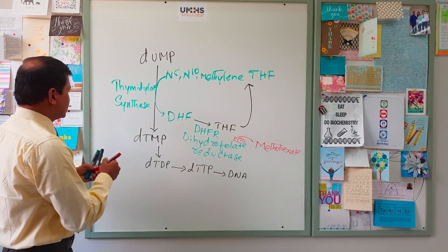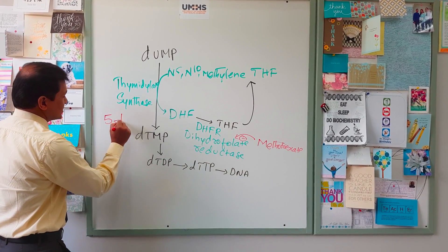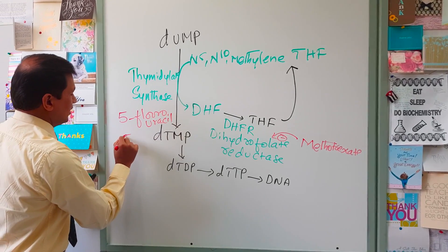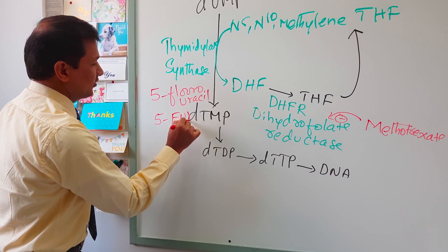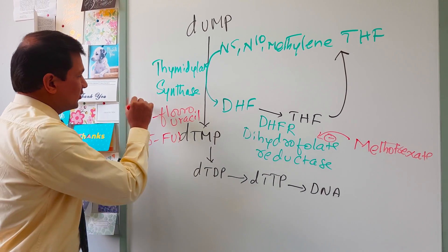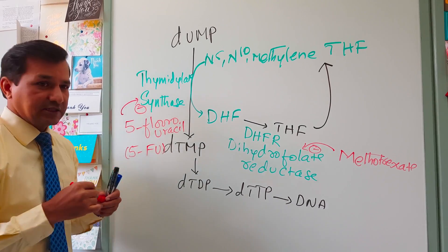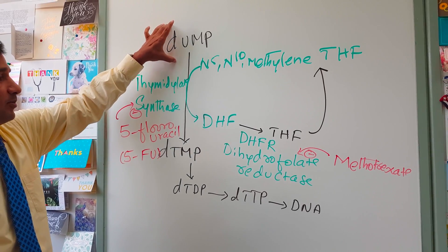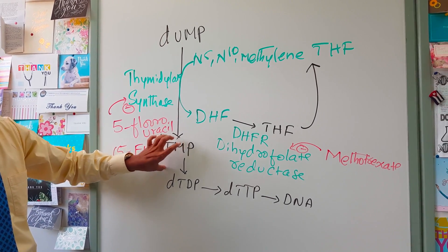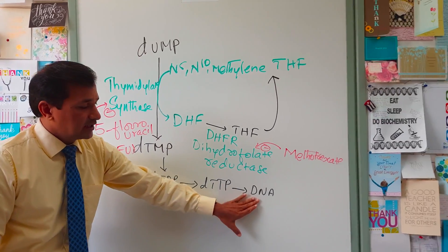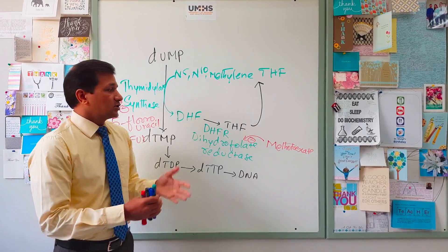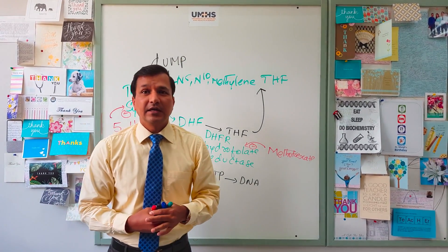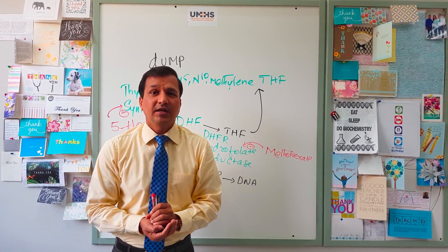Another drug is 5-fluorouracil, or 5-FU. This drug directly inhibits thymidylate synthase enzyme. When thymidylate synthase is directly inhibited, conversion of dUMP into dTMP is affected, meaning DNA synthesis will be decreased. These are the two important drugs related to this reaction in the synthesis of pyrimidine nucleotides.